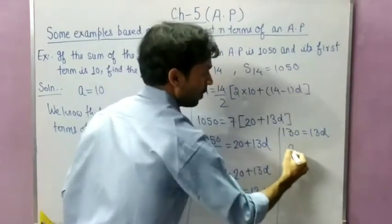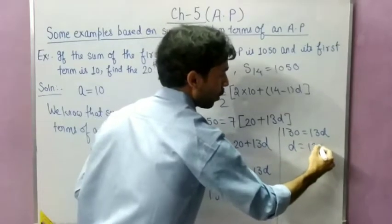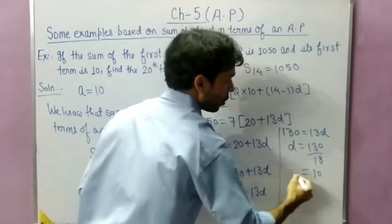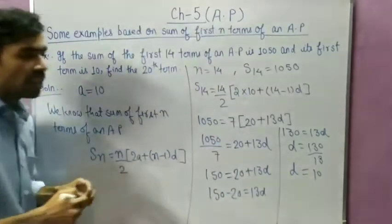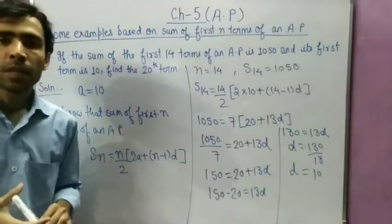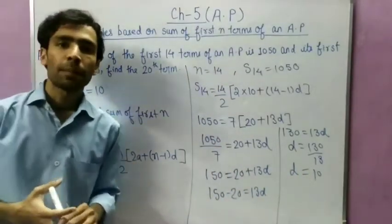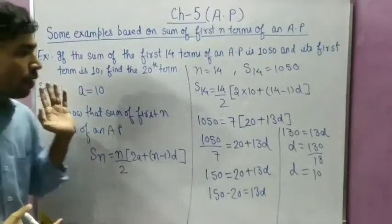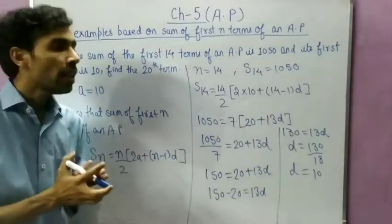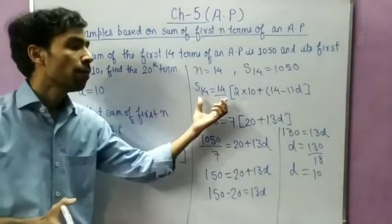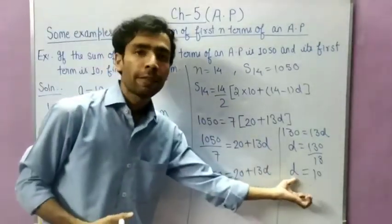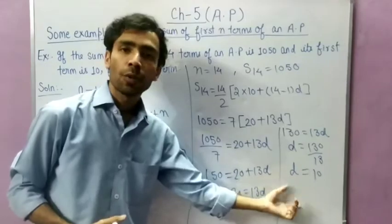So D equals 130 upon 13, which is 10. D is the common difference of the AP. By putting all the values into the sum formula, we have found the common difference, which is equal to 10.